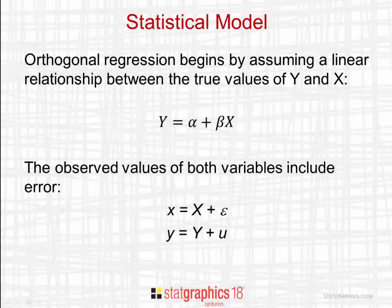Orthogonal regression begins by assuming a linear relationship between the true values of Y and X. I'll let uppercase Y and uppercase X represent the true values, which are related by the equation Y equals alpha plus beta times X.